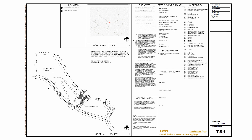Here we are looking at the title sheet. You can see we have a vicinity map — the little star is where the project is. We have a site plan, and we talk about drawing scale. We have fire notes, the development summary, and the sheet index, so you can see what professional disciplines are referenced in this set of drawings.